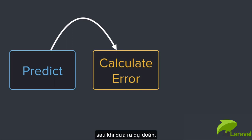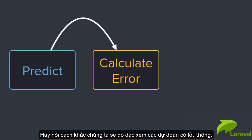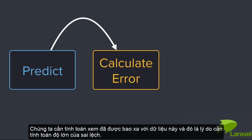After making the prediction, step two is calculating the error. In other words, we need to measure how good the prediction was. We need to calculate how far off we were from the data. And that's why we calculate the size of our error.